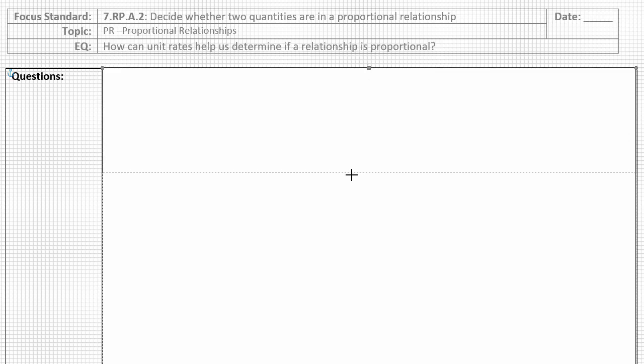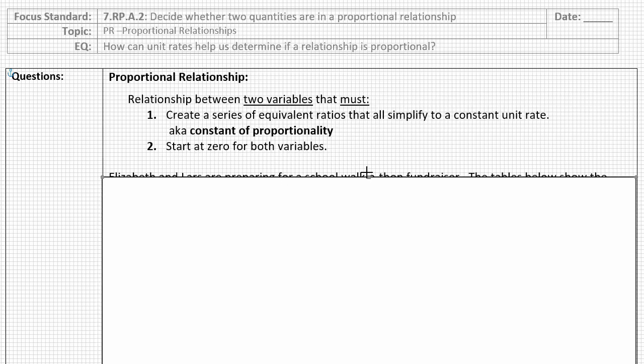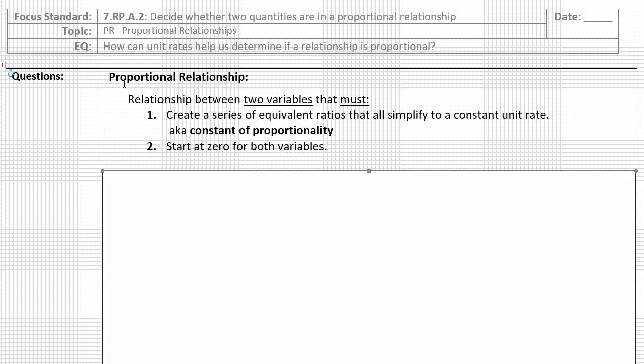Let's start by defining what we mean exactly by a proportional relationship. A proportional relationship, any relationship, is something that compares two variables. What makes it proportional is when that relationship includes the following criteria. It must create a series of equivalent ratios that all simplify to a constant unit rate. This is oftentimes referred to as a constant of proportionality. Let's examine our story problem for today to determine if we can use this criteria to decide whether or not the relationships are proportional.